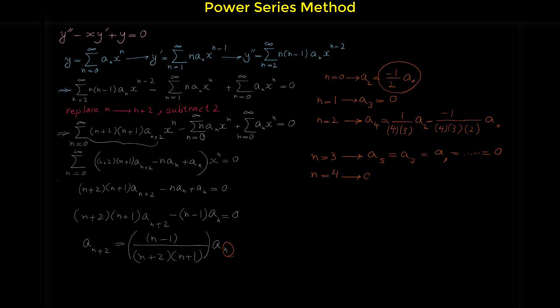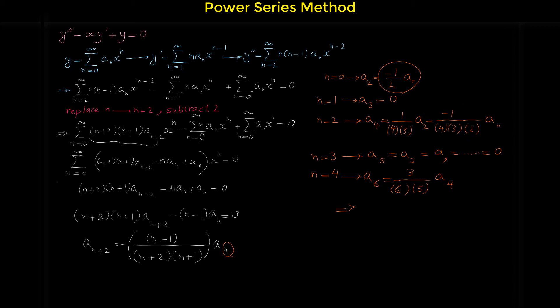Plugging in n equals four: a₆ equals four minus one is three, over four plus two times four plus one, which is six times five, times a₄. Substituting a₄ equals negative one over four factorial times a₀, we get a₆ equals negative three over six times five times four times three times two times a₀, which is negative three over six factorial times a₀. Looking at the pattern: a₂ has denominator two factorial, a₄ has denominator four factorial, and a₆ has denominator six factorial.